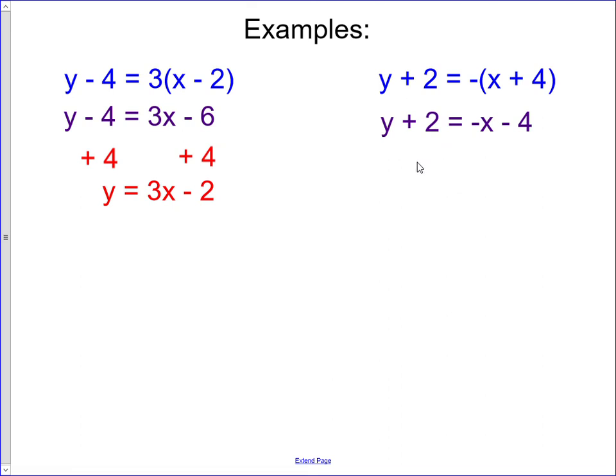Our next step is to isolate y. They're adding 2. The inverse of adding 2 is to subtract 2. We'll subtract 2 from both sides. These will cancel out, leaving us with y = -x - 6. This equation has a slope of -1 and a y-intercept of -6.